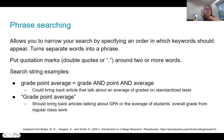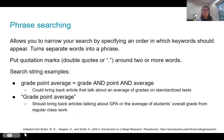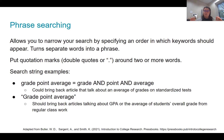I mentioned phrase searching earlier. Phrase searching is not exactly a Boolean operator, but it is syntax you will use in a search string — and it's a really powerful one that I suggest students use a lot. It allows you to narrow your search by specifying the order in which keywords should appear, turning separate words into one phrase. You put quotation marks — sometimes called double quotes — around two or more words to make that phrase. It's also a good idea to use nouns or noun phrases.